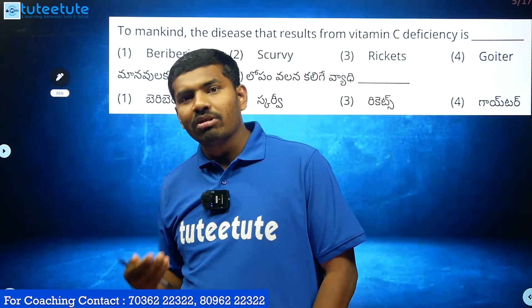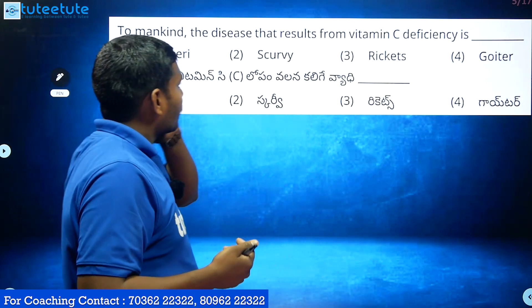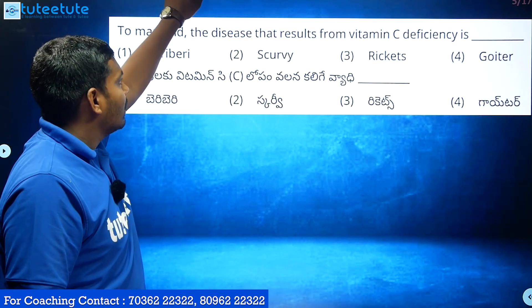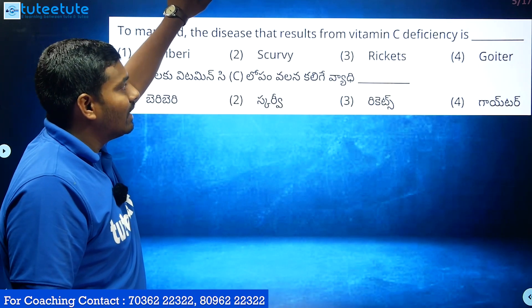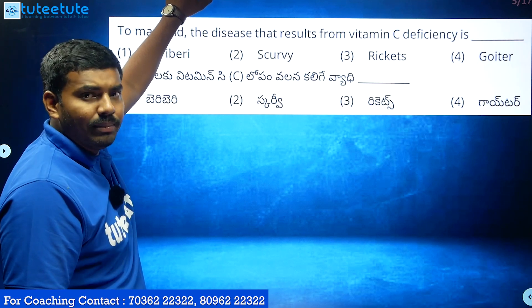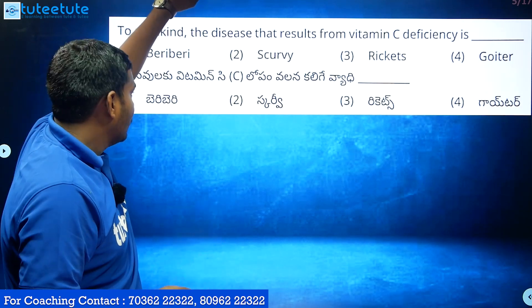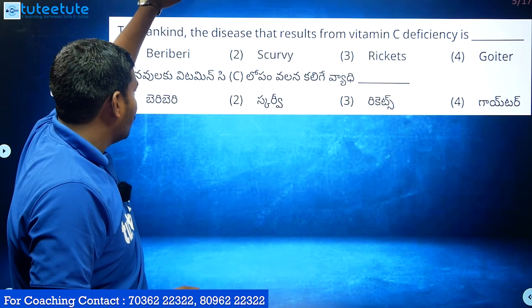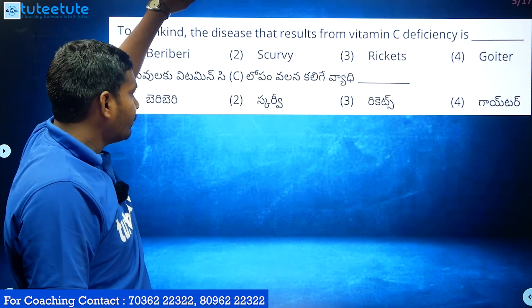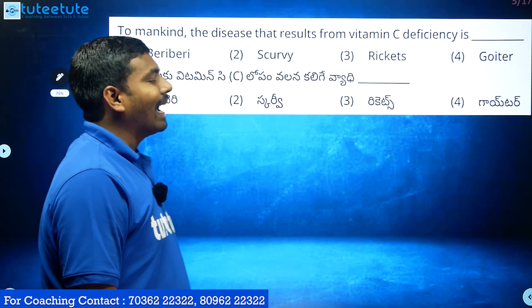The disease that results from Vitamin C deficiency — Vitamin C lack — what does it mean? The options are: Beriberi, Scurvy, Rickets, Goiter.